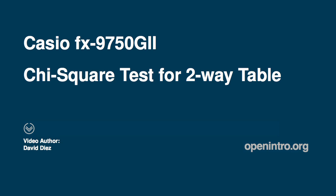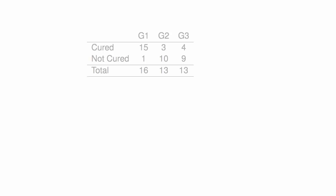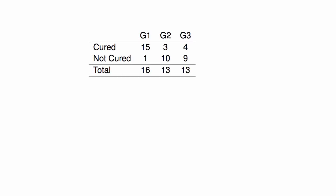We'll cover how to run a chi-square test for a two-way table using a Casio FX9750 graphing calculator. We'll use data from an experiment where there are three treatments.